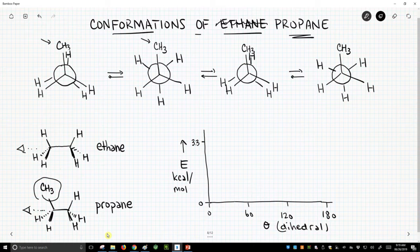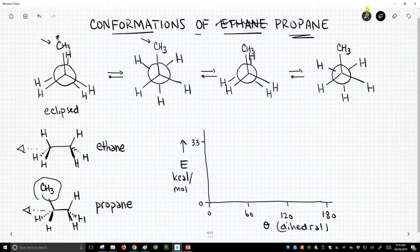So in our first picture, we have an eclipsed conformation, an eclipsed Newman projection. And I'm going to flag this methyl group and this particular hydrogen and use those as points of reference and say, here is our dihedral angle of zero degrees. Now, what is the energy of this structure?